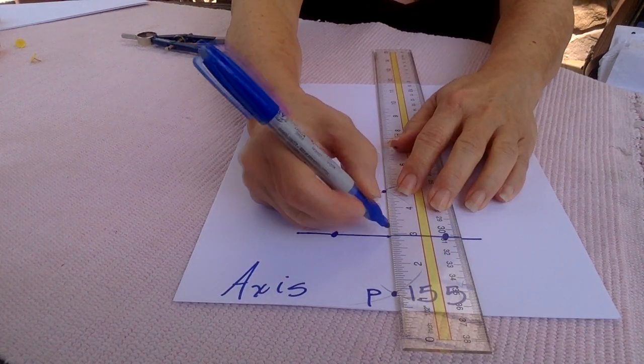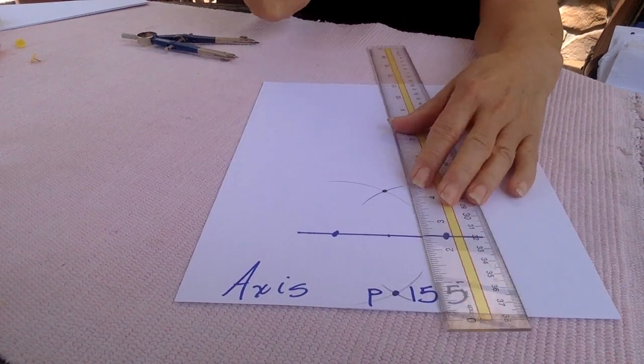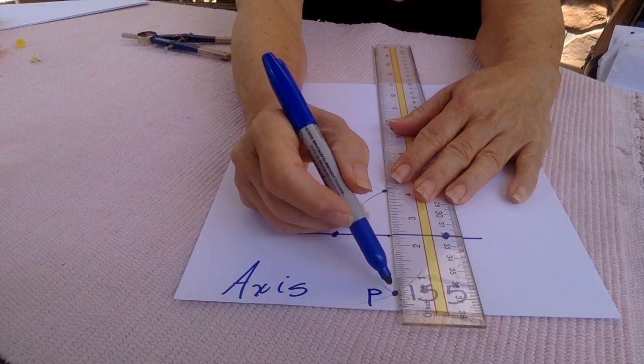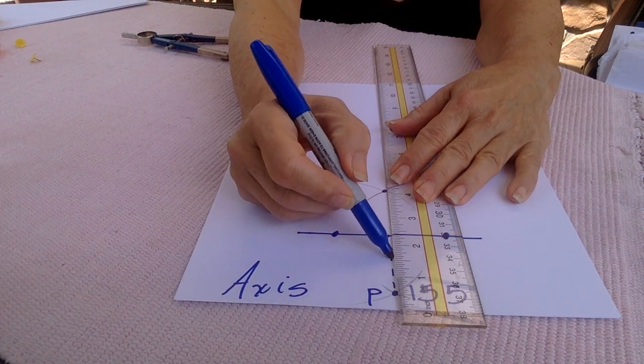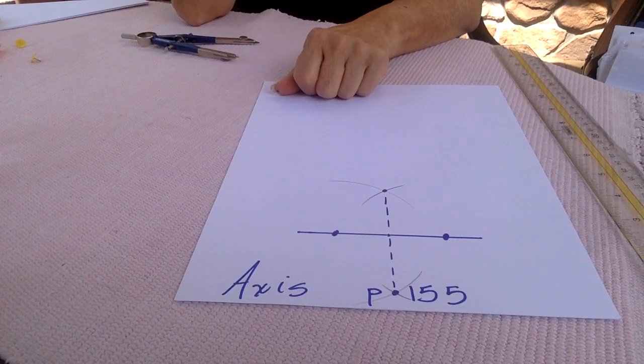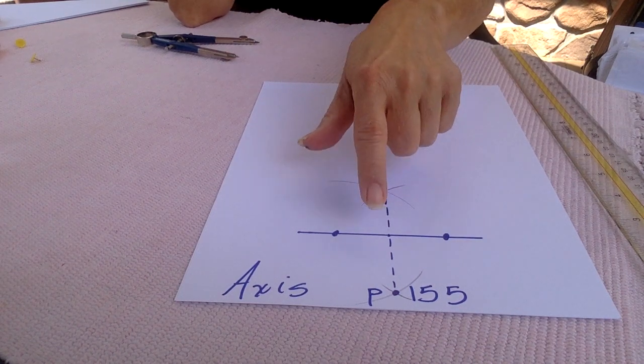Now we said last time that this defines the midpoint of this line segment, and that's correct. But this also is the perpendicular bisector of the line, which means that we have found the line that is perpendicular to the base that is also through the midpoint.